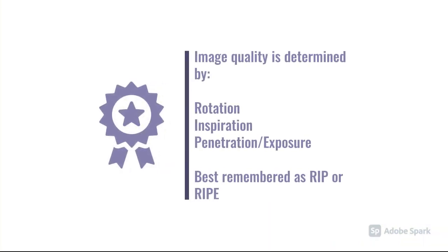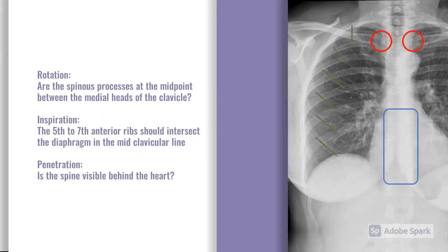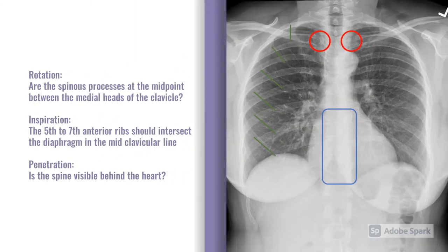In terms of image quality, we use the acronym RIP — or sometimes RIPE — which stands for rotation, inspiration, and penetration/exposure. When assessing these, ideally we want an image that isn't rotated, that has good inspiration, and adequate penetration.